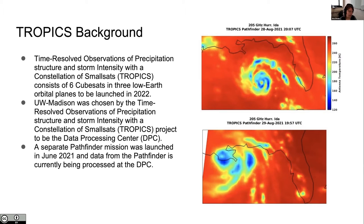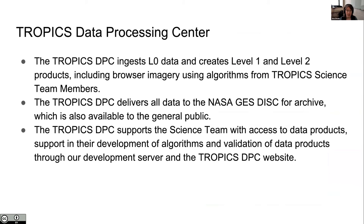Images from the pathfinder show the 205 GHz channel of Hurricane Ida just before landfall and then the next day when it makes landfall in the southern United States. These CubeSats are radiometers with 12 different channels focusing on temperature and water vapor profiles, precipitation measurements, and cloud ice measurements. The 205 GHz channel is a brand-new channel — being high frequency, it's very sensitive to scattering off precipitation, allowing us to clearly see rain bands around the eye of a storm. The Data Processing Center ingests Level 0 data from the provider.